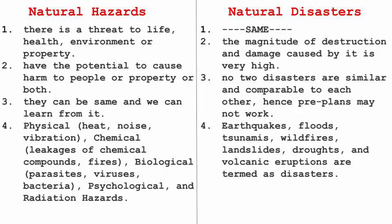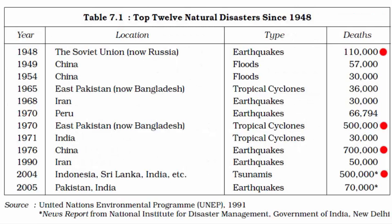If there is a nuclear hazard, the radiation caused by it also falls under biological hazard. The types of natural disasters one can witness include earthquakes, floods, tsunamis, wildfire, landslides, droughts, and volcanic eruptions. Their consequences are massive. Here are the top 12 natural disasters since 1948 — you don't have to remember everything, just go through the ones with the red dot next to them.